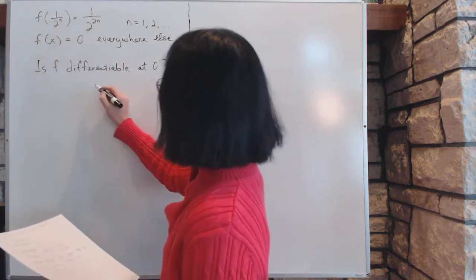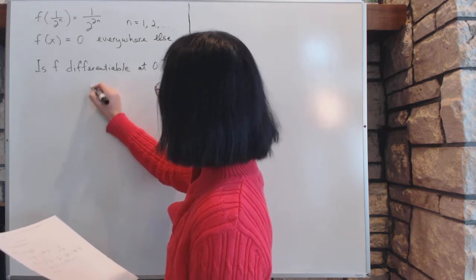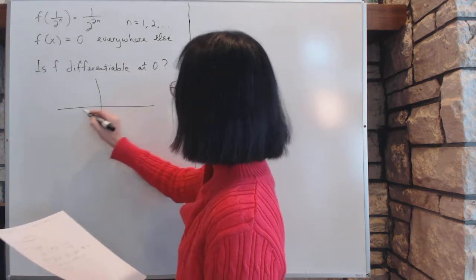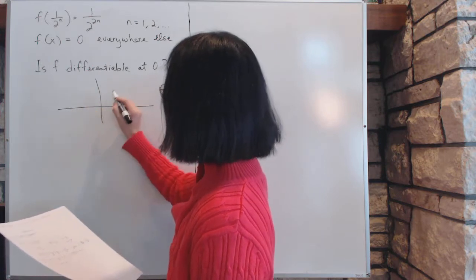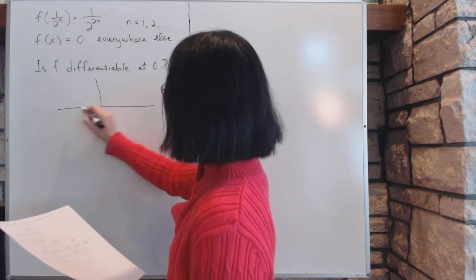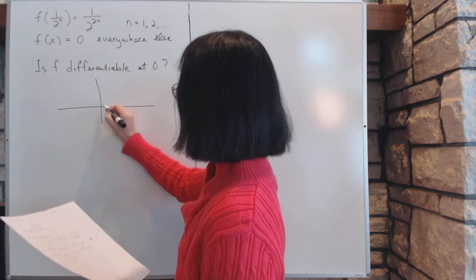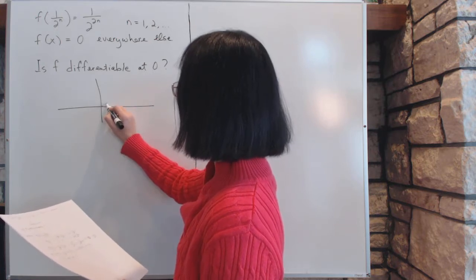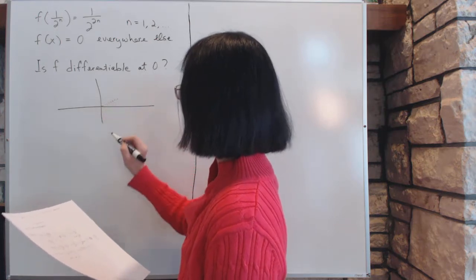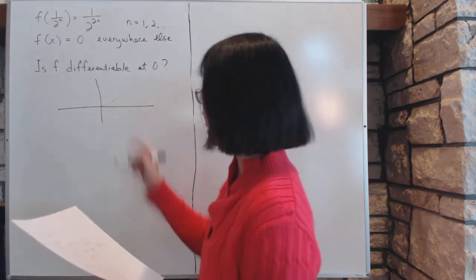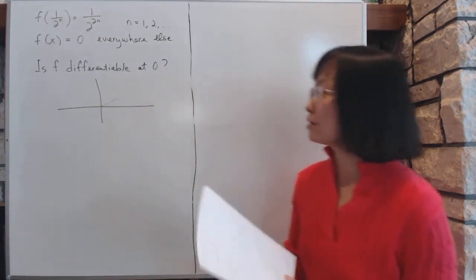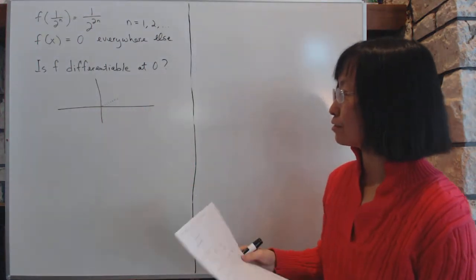That function is a very odd-looking thing that will be something like this. It is zero most of the time, but on certain dots it will come up to be about one-half at certain times. Now the question is, is this f differentiable?